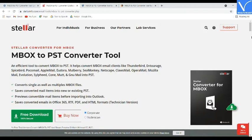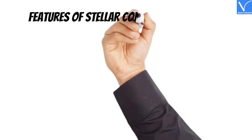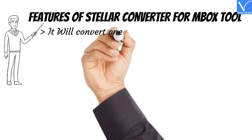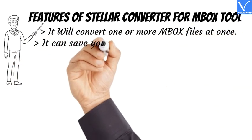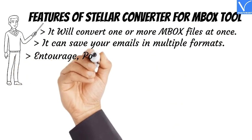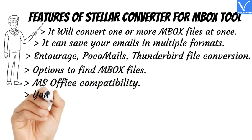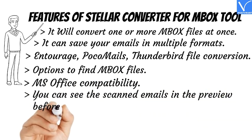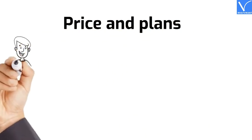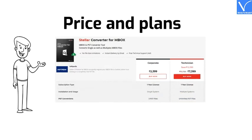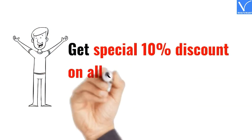It supports Microsoft Outlook versions 2003, 2007, 2010, 2013, 2016, and 2019. Features: Converts one or more MBOX files at once, saves emails in multiple formats, supports Entourage, PocoMail, and Thunderbird file conversion, includes options to find MBOX files and MS Office compatibility. You can preview scanned emails before converting to PST. Our viewers get a special 10% discount on all Stellar Converter for MBOX Tool licenses. Links are in the description.